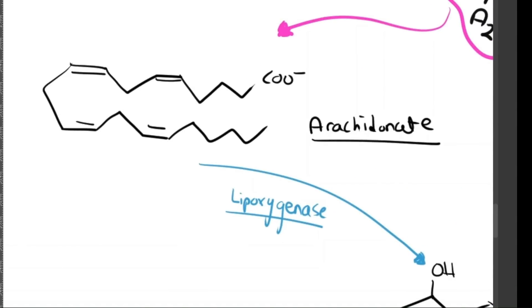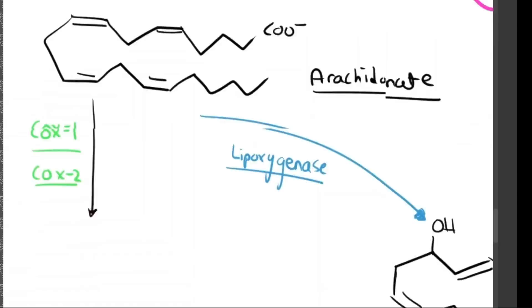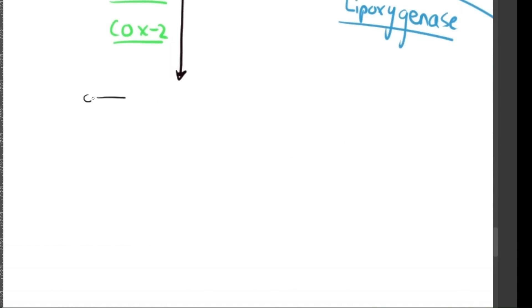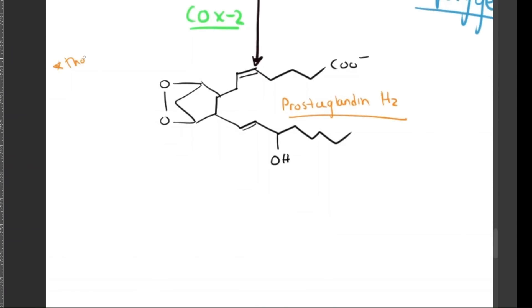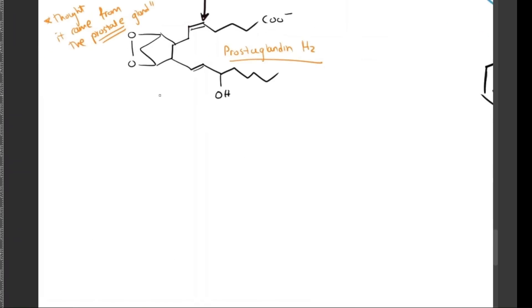Now, going back, we're going to branch off into the other pathway, which is going to be via cyclooxygenase 1 and 2. Both COX1 and COX2 basically convert arachidonic acid into prostaglandin H2 or PGH2. When prostaglandins were first discovered, a fun fact is that scientists thought that they came from the prostate gland, hence the name. But we end up finding out that they don't just come from the prostate. They play a much bigger role in the body, regulating inflammation, fever, blood clotting, and even stomach protection.